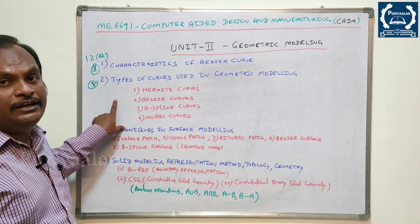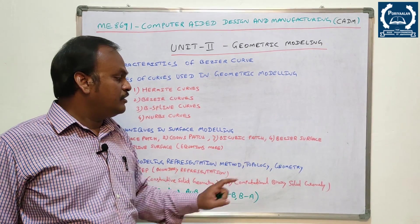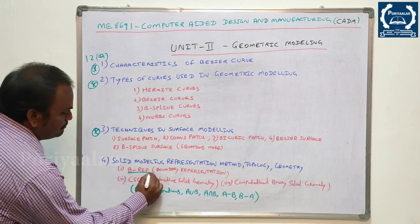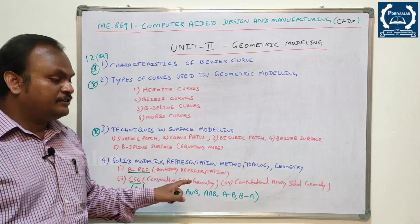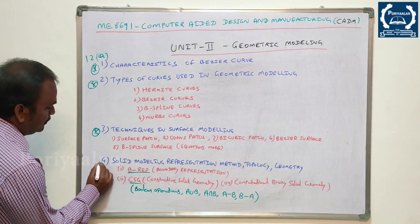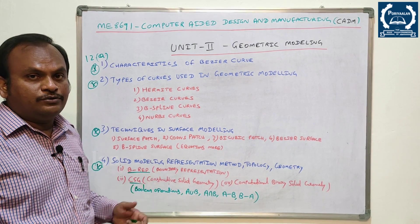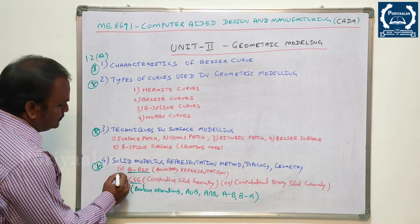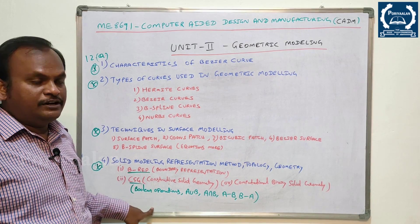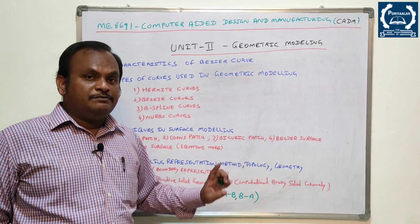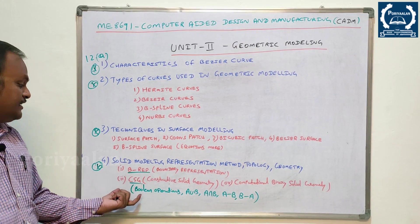If you prefer geometric modeling, it will be easier. The fourth question is solid modeling — representation method, topology and geometry. There are two types: B-REP (Boundary Representation) and CSG (Constructive Solid Geometry). This is a very important topic with two divisions. You need drawings as well as Boolean operations: A union B, A intersection B, A minus B, B minus A. CSG and B-REP are compulsory topics in Unit 2.